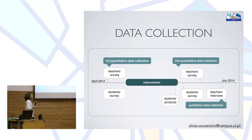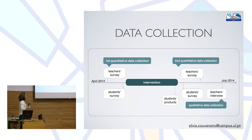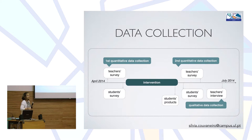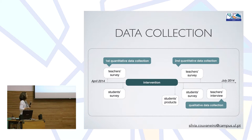In this slide, I want to show how the data collection happened according to the intervention. First of all, we had the teachers' surveys before the intervention. At the end of the intervention, we collected the students' products, and afterwards we had the teachers' and students' surveys, and finally, after analyzing all the data collected, the teachers' interview. This happened between April and July of 2014.